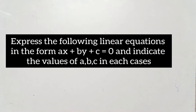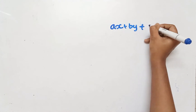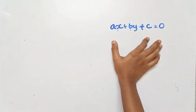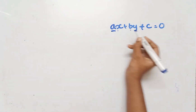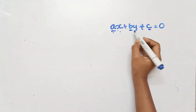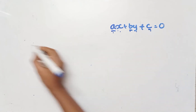Now the second question: Express the following linear equations in the form ax plus by plus c equals 0, and indicate the values of A, B, and C in each case. The general format is ax plus by plus c equals 0. The coefficient of x is A, the coefficient of y is B, and the constant is C.